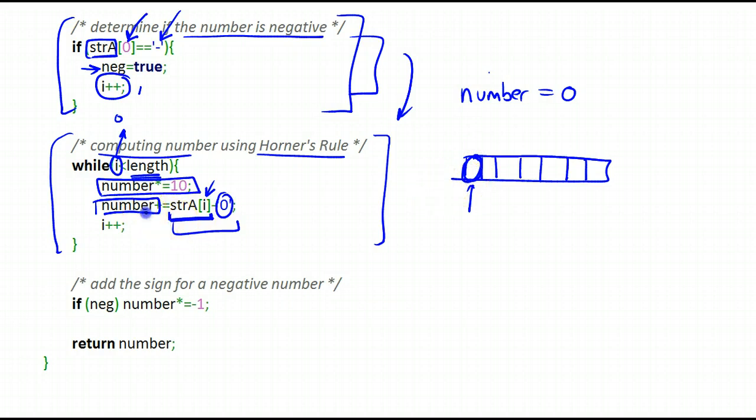And what I do is I add it to number. So I add it right here and then I increment i. If i is still less than length that means I have more characters to process, then I essentially keep on going with my Horner's rule.